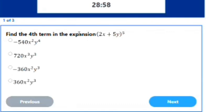I've been given this question: Find the fourth term of the expansion (2x + 5y) raised to power 5. The first thing you need to note in the options is the sum of the powers of the variables.